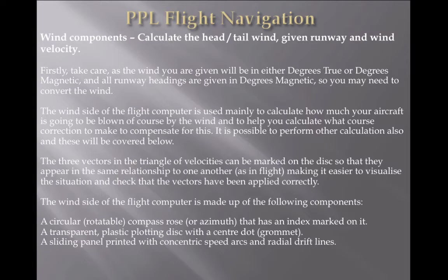Cautionary tale aside, we will go back to the flight computer. The wind side of the flight computer is mainly used to calculate how much your aircraft is going to be blown off course by the wind and to help you calculate what course correction to make to compensate. Under the triangle of velocities, there are three vectors, and they can be marked on the disk so that they appear in the same relationship to one another as they would be in flight. This makes it easy to visualize the situation and check the vectors have been applied correctly. Don't be afraid to quickly throw together a wind triangle on paper to check and verify your results — it's logical.